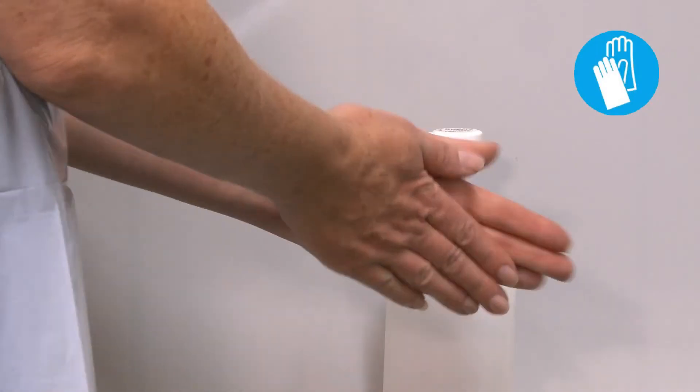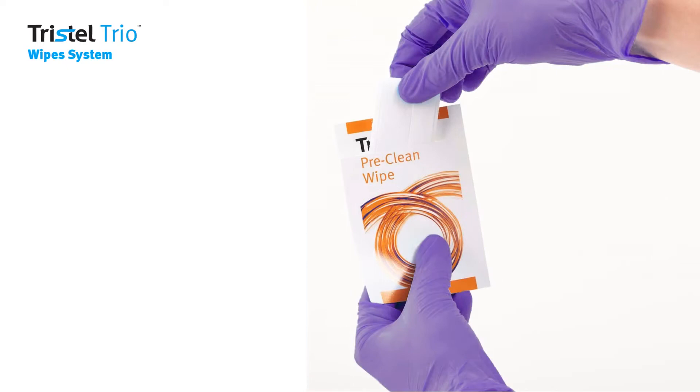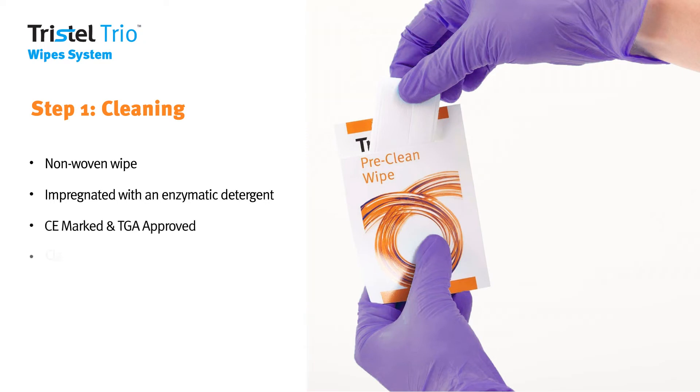Disinfect your hands and put on gloves. The first step in the decontamination process is cleaning. The Tristel Pre-Clean Wipe is a non-woven wipe impregnated with an enzymatic detergent and is CE marked and TGA approved as a Class 1 medical device.